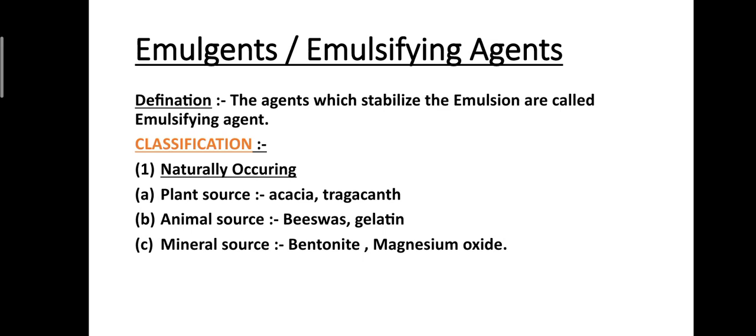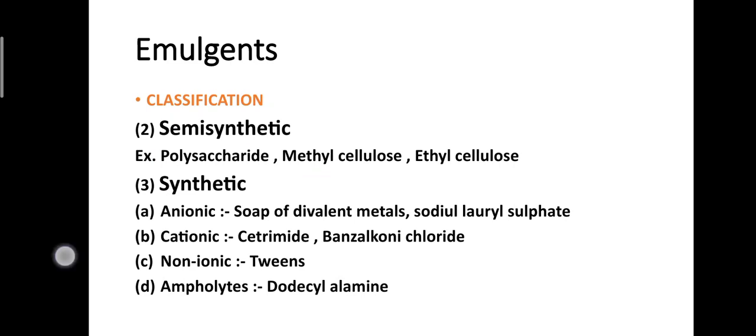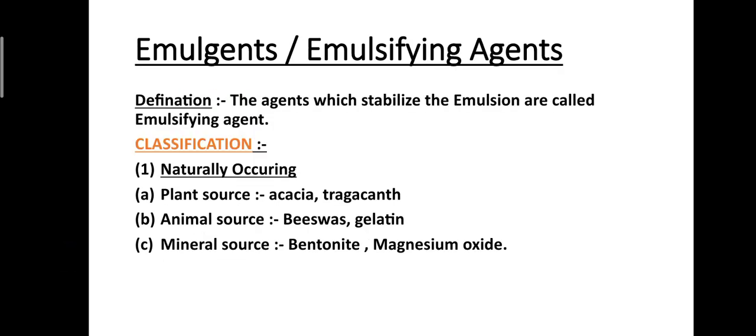Emulsifying agents — definition: The agents which stabilize the emulsion are called emulsifying agents. They are the third substance used in preparing emulsion, which is a biphasic liquid dosage form in which two immiscible liquids are made miscible with the help of these agents.